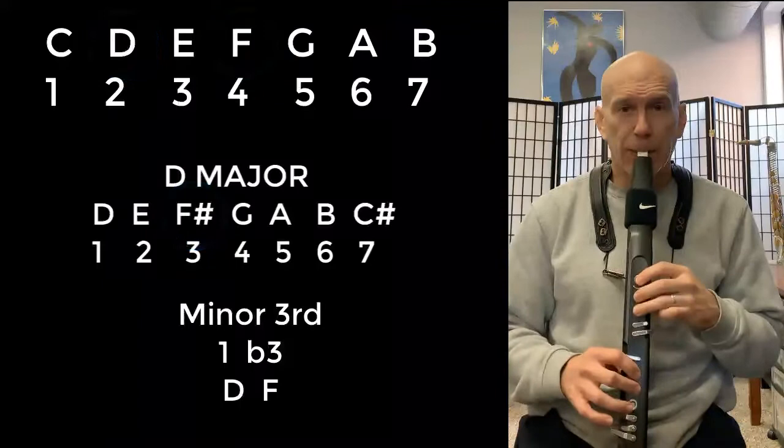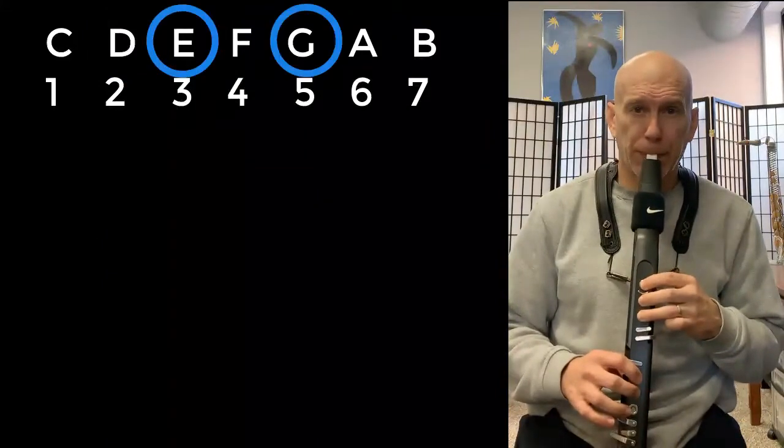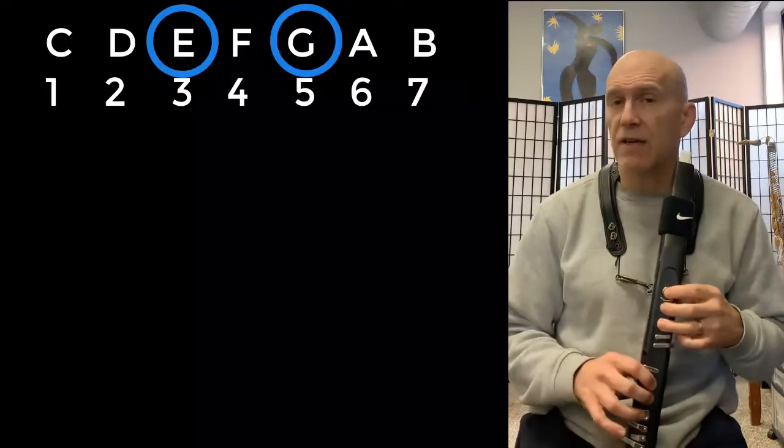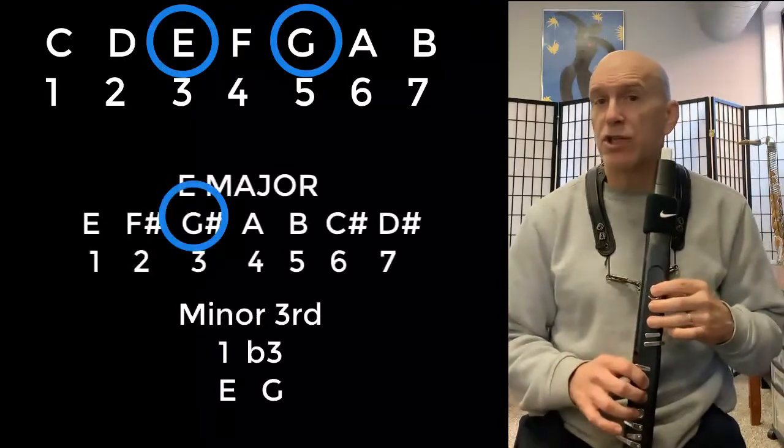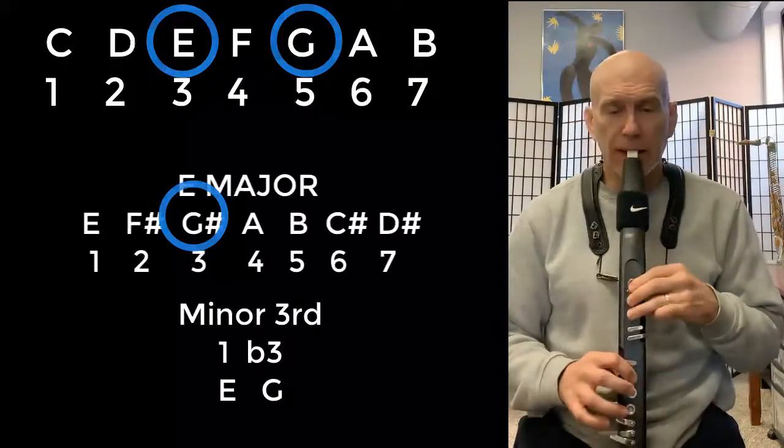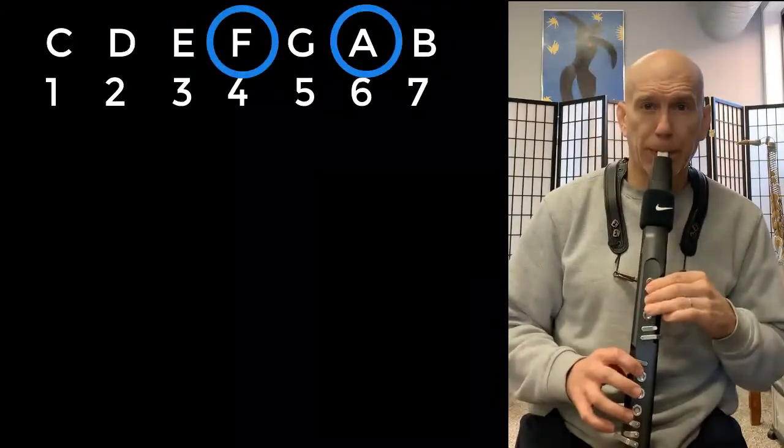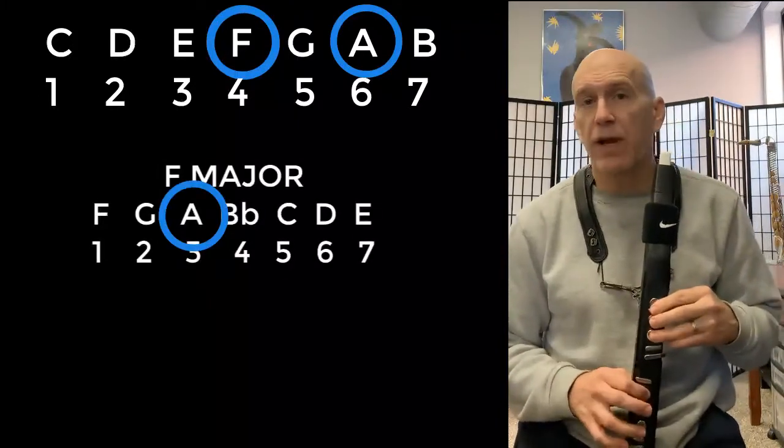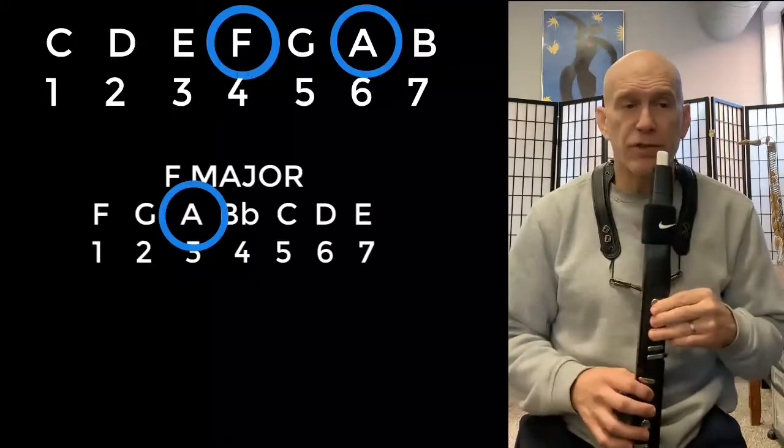Let's do E. That's a minor third because in the key of E major it would be a G sharp so we had to make it a G natural. F. F to A is a major third because that's the way it happens in an F major scale.